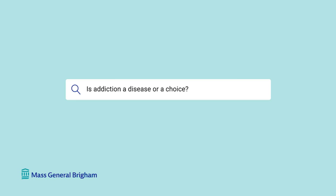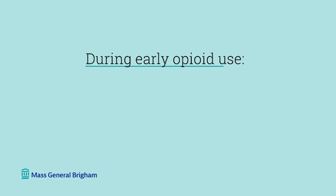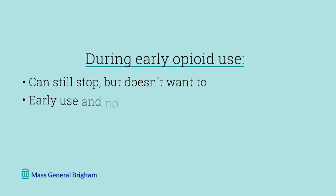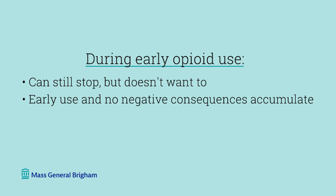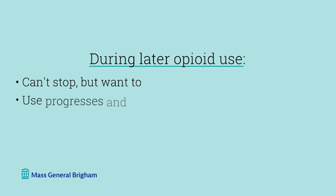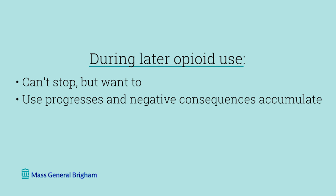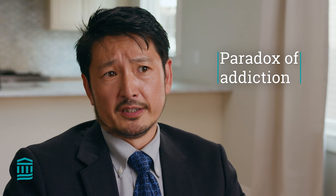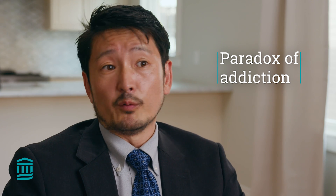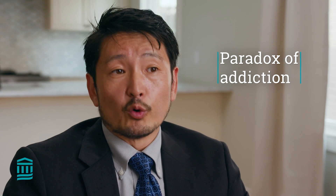Is addiction a disease or a choice? It's both. Early on in the experimentation of these drugs, the person is able to stop, probably. But there aren't a lot of negative consequences that would motivate stopping. As use progresses and negative consequences accumulate, it actually becomes much harder to stop. That's the paradox of addiction — early on, the person probably could have stopped if they wanted to, but there was no perceived need to, because there wasn't as much harm associated with it. But as the harms accumulate, it becomes harder and harder to stop.